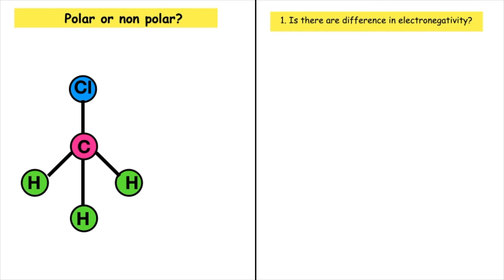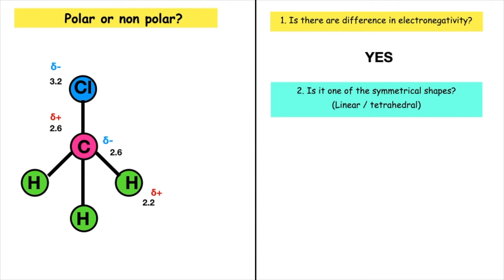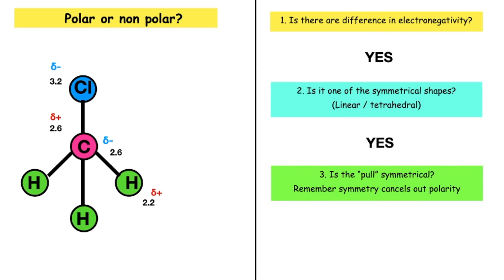Is this molecule polar or non-polar? Firstly, is there a difference in electronegativity? Yes — carbon is 2.6, hydrogen is 2.2, and chlorine is 3.2. There is a difference in electronegativity within the bond of carbon and hydrogen, and also between carbon and chlorine. Is it one of the symmetrical shapes — linear or tetrahedral? Yes, it is tetrahedral. However, is the pull symmetrical? It is not symmetrical, so therefore it remains polar and would have LDFs and permanent-dipole–permanent-dipole interactions.